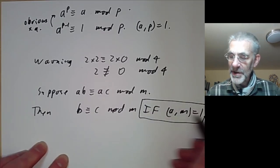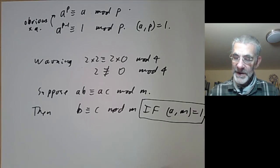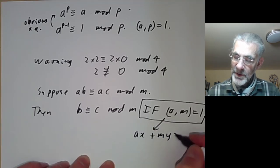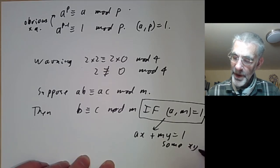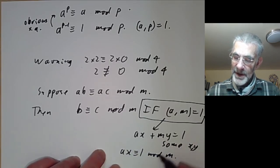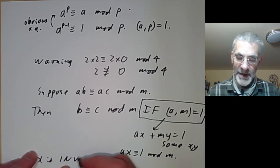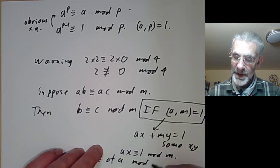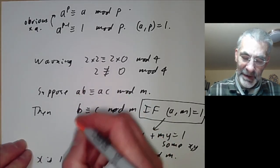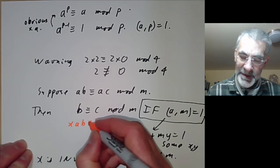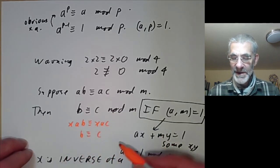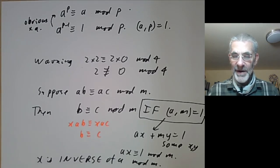We need this extra co-primality condition to divide in a congruence. This follows because if a and m are co-prime, then ax + my = 1 for some x, y, which means ax is congruent to 1 modulo m — so x is an inverse of a mod m. Multiplying the congruence by x gives xab congruent to xac mod m, and then b congruent to c mod m, since xa equals 1.